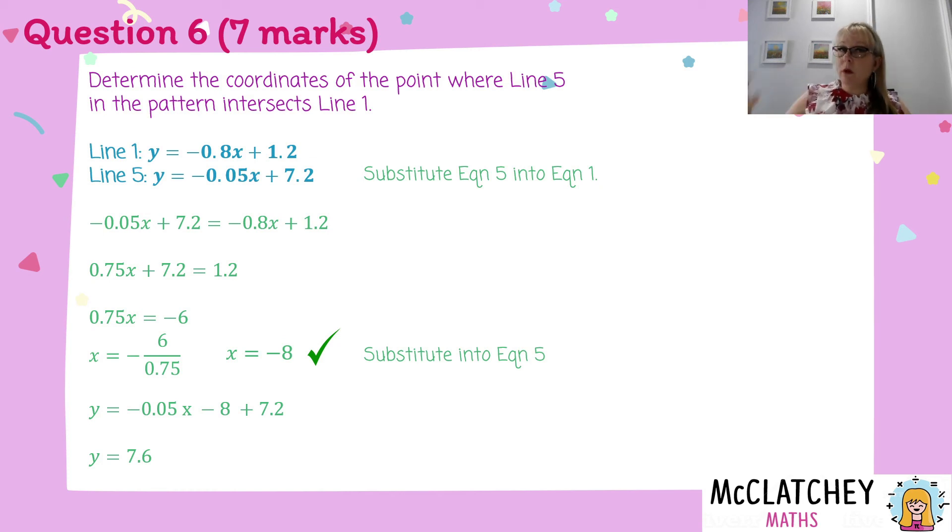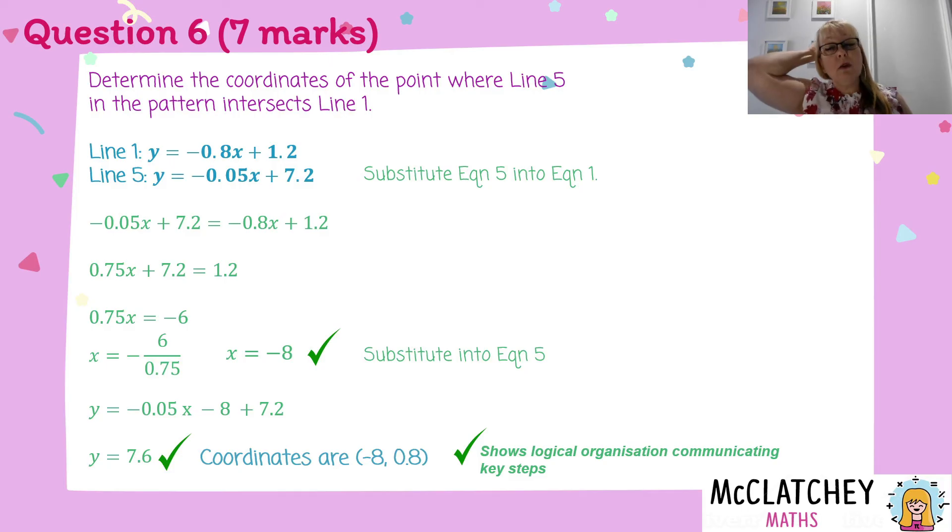Now remember, these are coordinates of a point where they intersect. So I need to put it in coordinate form. I've got a mark there for finding my y-value. And I need to state my coordinates as negative 8, 7.6. And I got my final seventh mark for showing those logical, organization, communication of my key steps. So that's little things like labeling the equations, telling them what you're doing now. You're substituting, writing your coordinates at the end as proper coordinates, and having that clear flow.